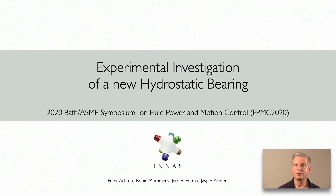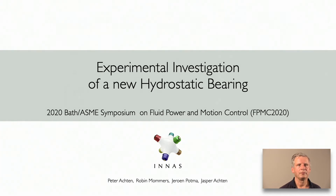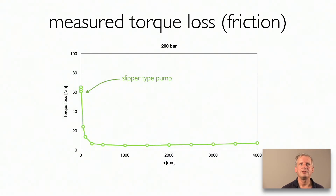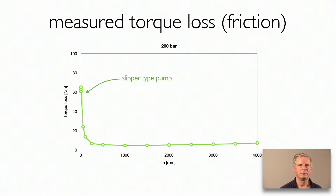One of the most important concepts in tribology is the so-called Stribeck curve. Here you see such a Stribeck curve — this is a measurement in our lab of a conventional slipper type pump. The curve shows the strong increase of friction when the rotational speed of the pump is reduced.